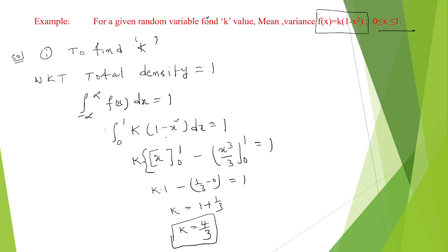So this is the way to calculate the k value using the total density function equal to 1. With k outside, integration of 1 gives x from 0 to 1, that is 1. Integration of x squared gives x cubed by 3, that is 1 by 3. So k minus 1 by 3 equals 1, giving k equal to 4 by 3.